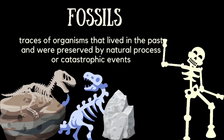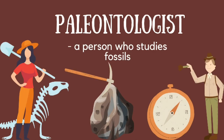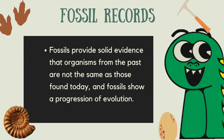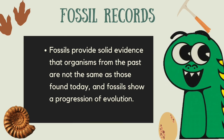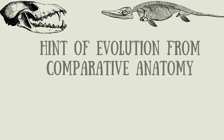Have you ever seen fossils of any organism? Fossils are examples of evidence that paleontologists use in studying evolution. They are traces of organisms that lived in the past and are preserved by natural processes or catastrophic events. A paleontologist is a person who studies fossils. Most fossils are commonly found in sedimentary rocks, formed from hard parts of organisms like woody stems, bones, or teeth. Fossils provide solid evidence that organisms from the past are not the same as those found today, and they show the progression of evolution.